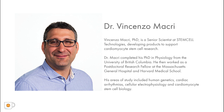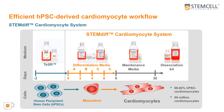Making human pluripotent stem cell-derived cardiomyocytes is technically challenging. Stem Cell has developed a media kit so you can efficiently make human pluripotent stem cell-derived cardiomyocytes in your lab. Our STEMdiff cardiomyocyte differentiation kit can take high-quality human pluripotent stem cells and differentiate them to a confluent monolayer of beating cardiomyocytes within 15 days, producing greater than 80% CTNT-positive cells and over 50 million cardiomyocytes.